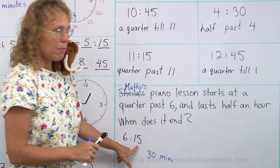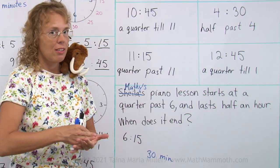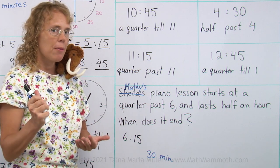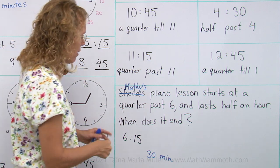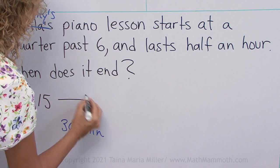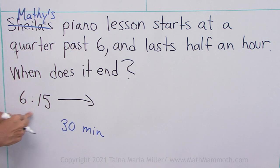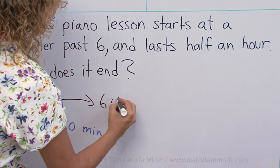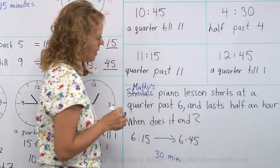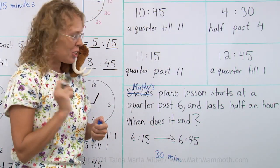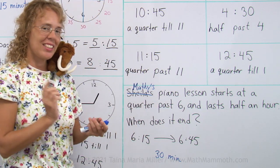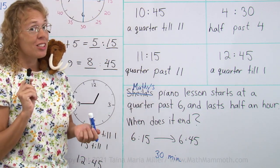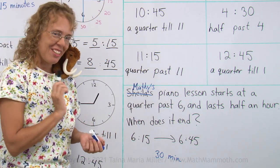So now we have the fifteen minutes and thirty minutes. We will add those. What's fifteen plus thirty? Forty-five. So we will get six hours and forty-five minutes. So it ends at 6:45, which is also fifteen minutes till seven, which is also a quarter till seven.